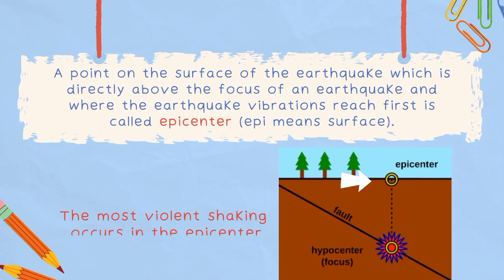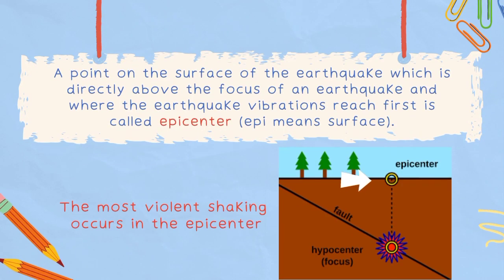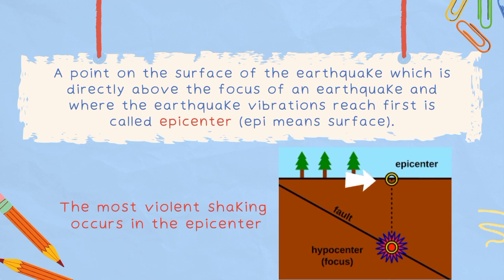A point on the surface of the earth which is directly above the focus of an earthquake and where the earthquake vibrations reach first is called the epicenter. The epicenter is where the most violent shaking occurs.